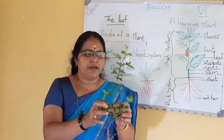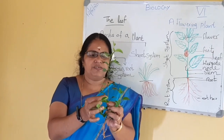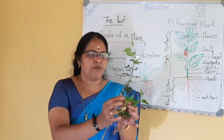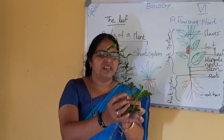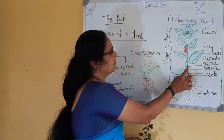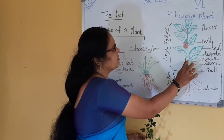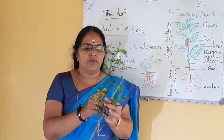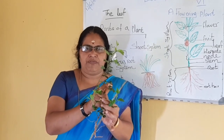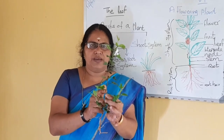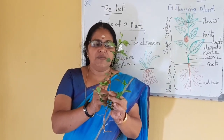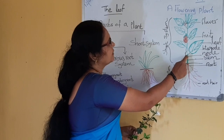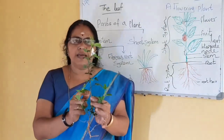The part of the stem from where a leaf arises is called the node. From the stem, the leaf arises — this point is the node. From one node, one leaf; from another node, another leaf. The space between the two nodes is called the inter-node. The leafless portion between the two nodes is called the inter-node.